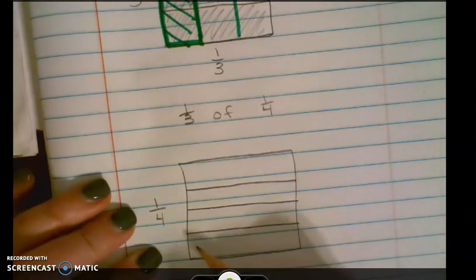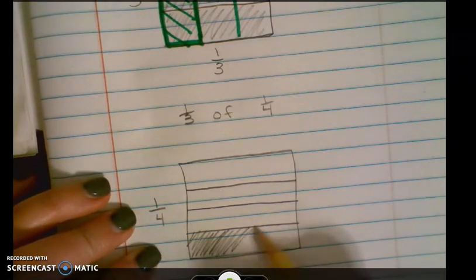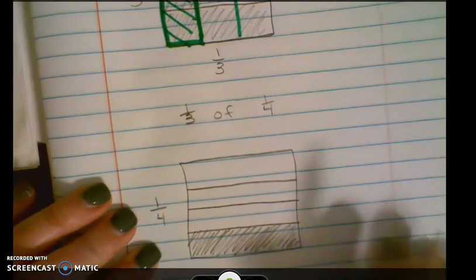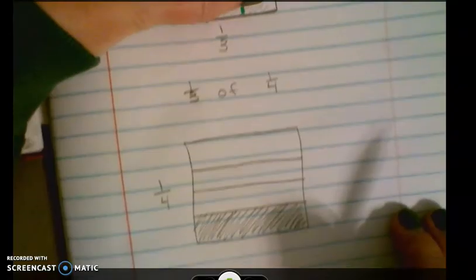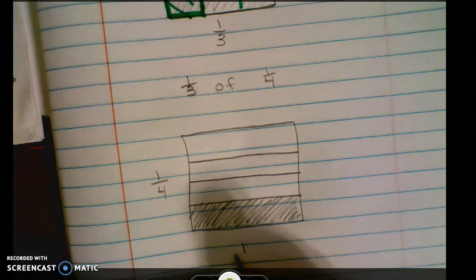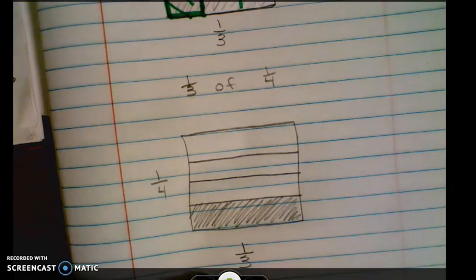Going across my page I'm going to shade in one-fourth. It honestly doesn't matter which one you shade as long as you shade in one out of four. Then I'm going to take that one-fourth and I'm going to take one-third of one-fourth.